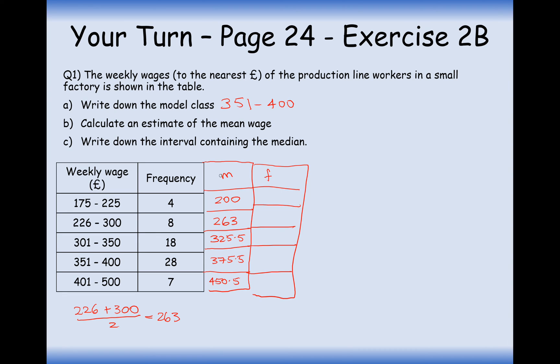the frequency times by the data value here, and we'll call that x here. So what we're going to do is 200 times by 4, which is 800. The next thing we do is 8 times 263, which is 1052. 18 times 325.5 is 5,859. 28 times 375.5 gives you 10,514. And 7 times 450.5 is 3153.5.